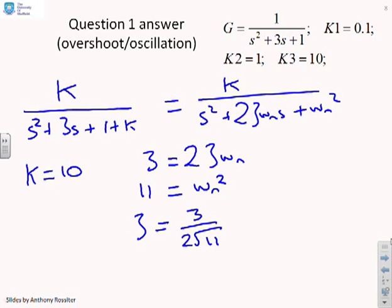So what that tells me is that zeta equals 3 over 2 root 11, which is, I'm going to be simplistic here, it's approximately a half, which means we are quite a lot underdamped. So in other words, as K goes up to 10, we're going to expect a fair amount of overshoot and oscillation. Whereas with K equals 0.1 and 1, we had real roots, and we don't expect that.